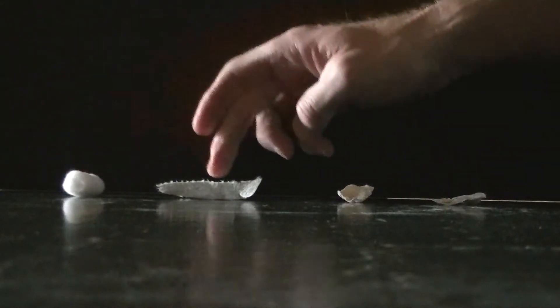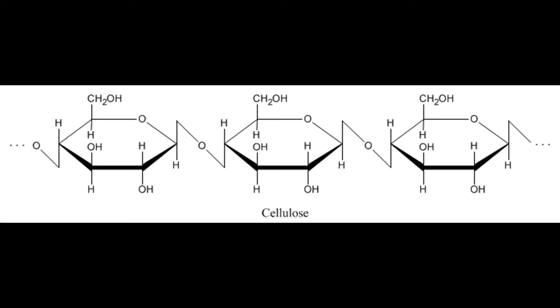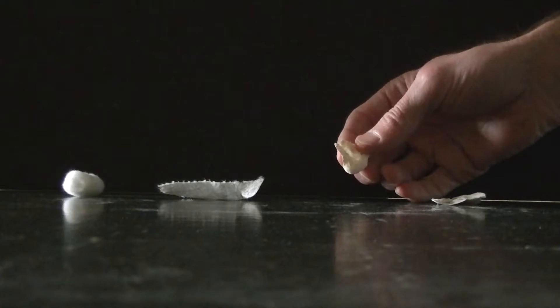The cotton and the paper towel probably contain somewhere between 70 and 90 percent cellulose. This chemically treated piece of cotton has been treated with a mixture of sulfuric and nitric acid.